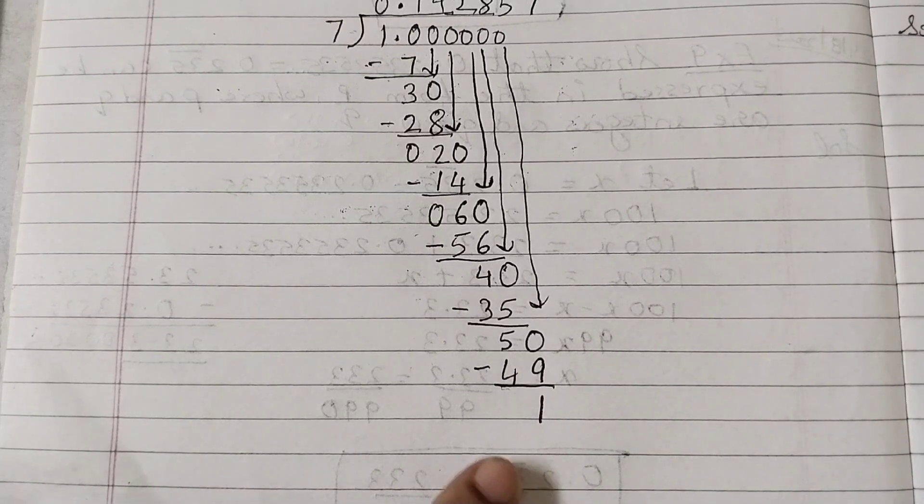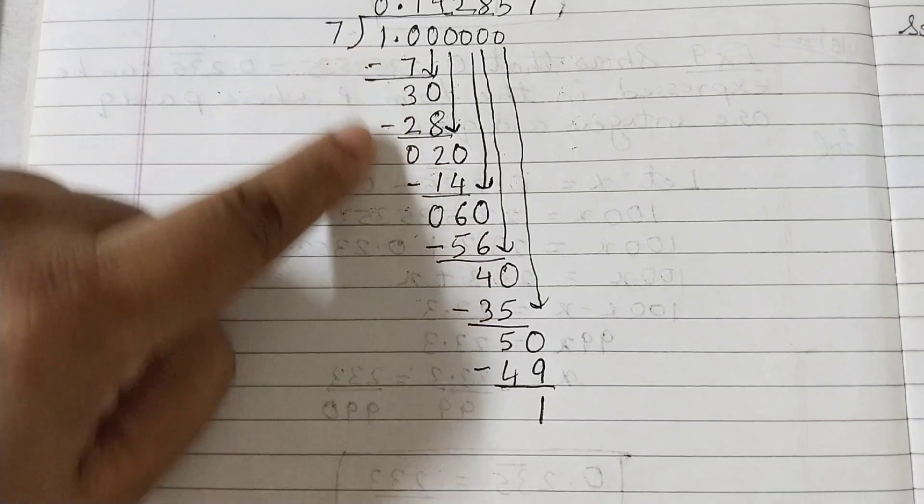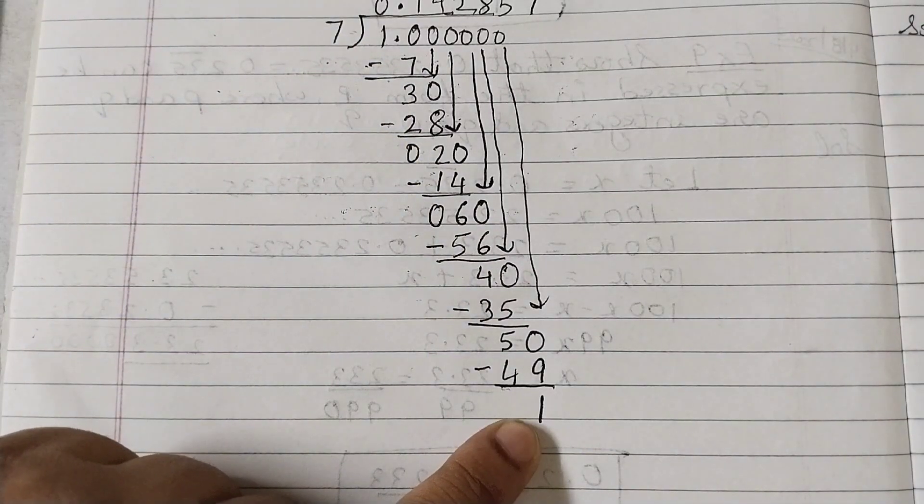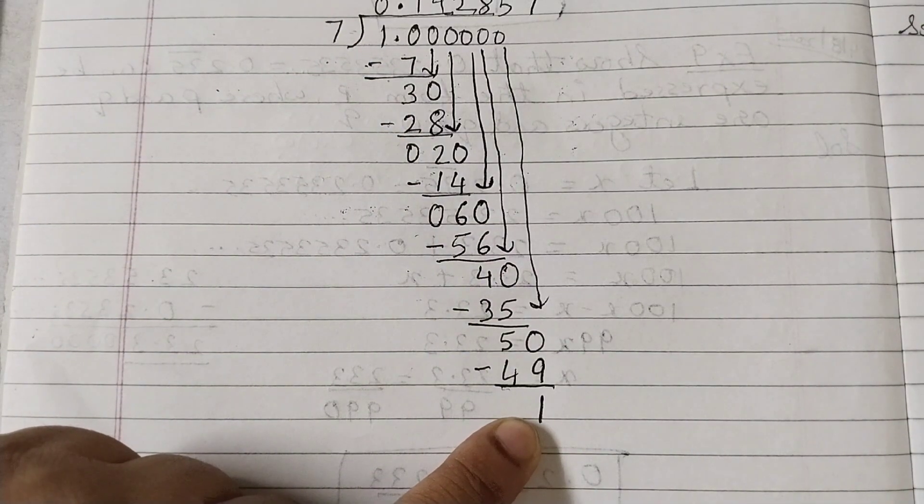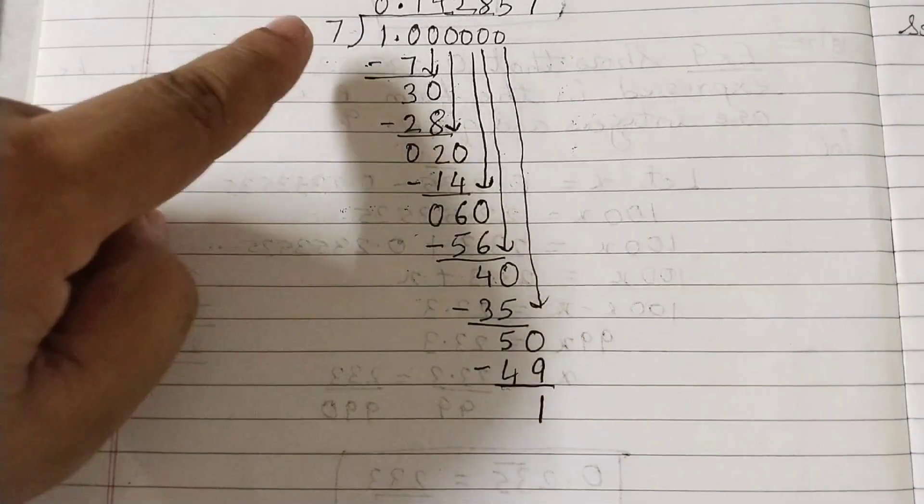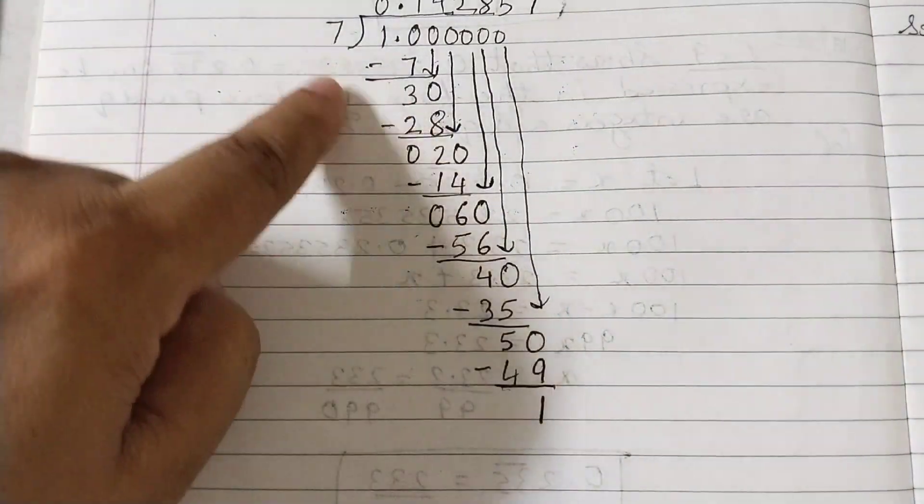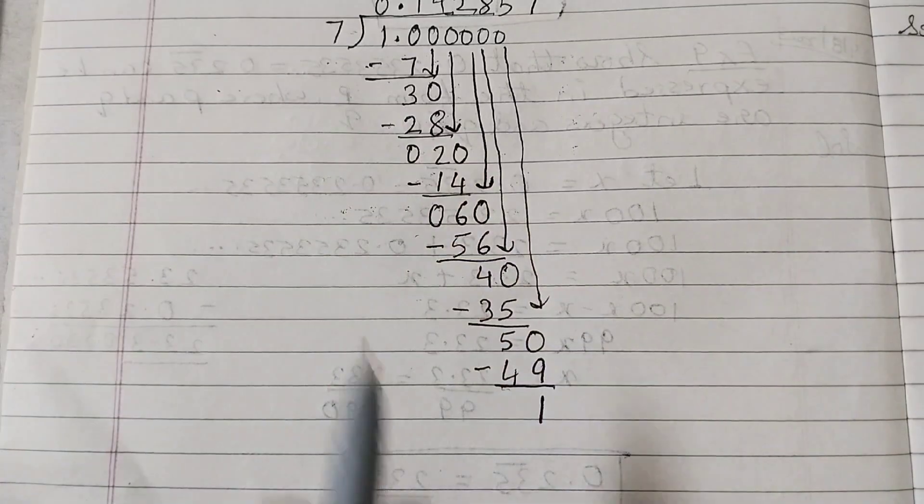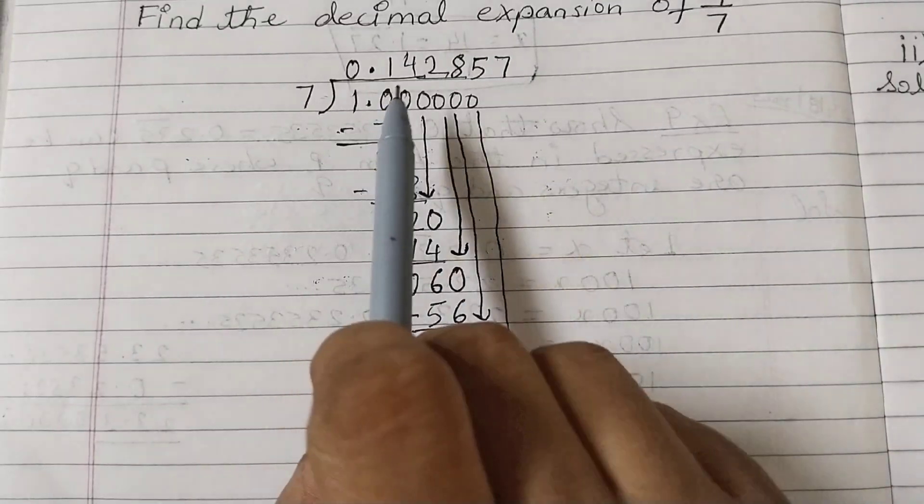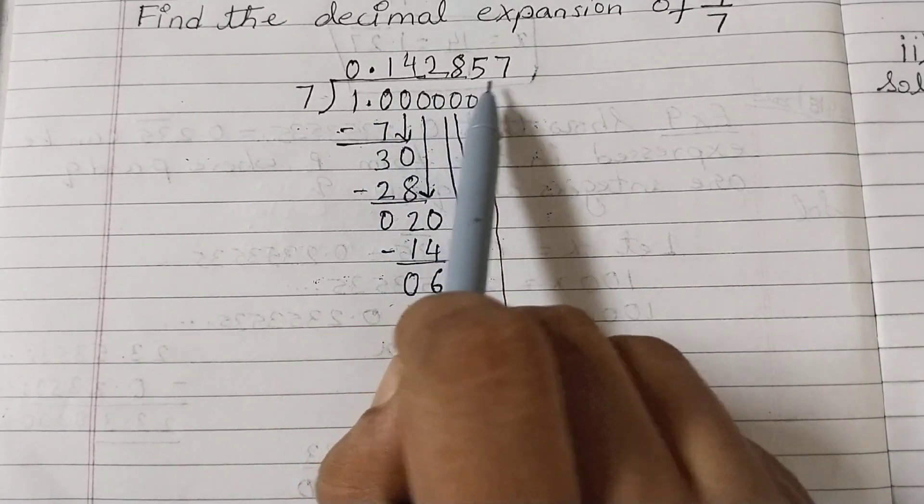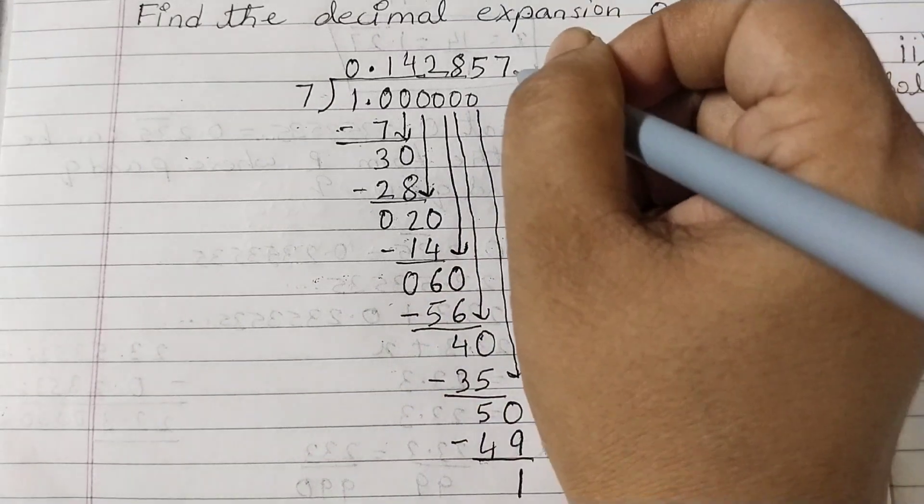If you see, we started with 1, and again we got 1 as a remainder. That means if we go on dividing, again we will get the same sequence of divisions. Which means that this block here, 1, 4, 2, 8, 5, 7, is going to repeat itself.